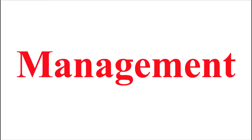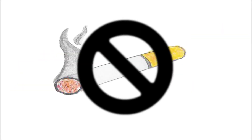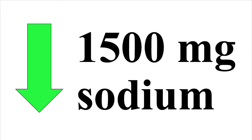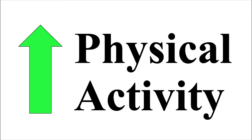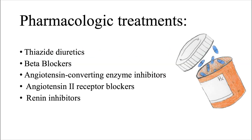Management options for hypertension include lifestyle modifications such as reducing salt intake, cessation of smoking, and increasing physical activity. It is recommended that patients ingest no more than 1,500 mg of sodium per day and participate in 30–45 minutes of moderate to intense physical activity 4–7 times per week. Pharmacologic treatments may be prescribed, including thiazide diuretics, beta blockers, ACE inhibitors, angiotensin-2 receptor blockers, and renin inhibitors.